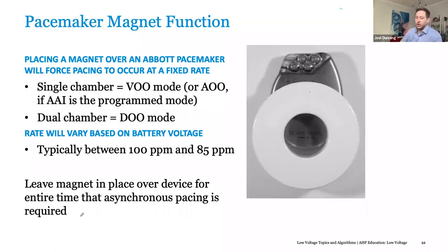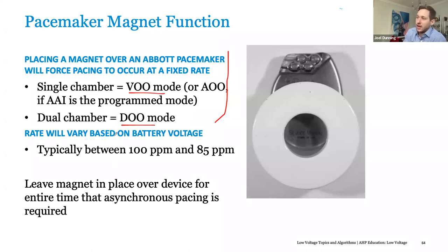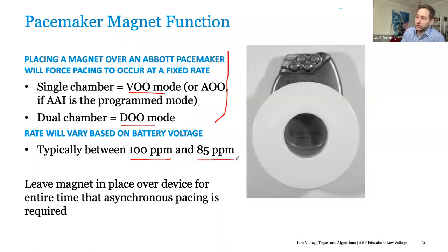Just to go over pacemaker functionality: pacemaker functions with ICDs will inhibit therapy as far as shocks, but will not affect the pacemaker. With a pacemaker, when you apply a magnet to it, it will cause it to pace asynchronously — either VOO or DOO depending on how it's programmed. It's also usually used as an indicator of battery life. In Abbott devices, if you place a magnet over a pacemaker and it's 100 beats per minute, that means it has a good battery. As you get closer to 85 beats per minute asynchronous, that indicates the battery is nearing ERI and needs to be replaced. Once you take the magnet off, it reverts back to its non-magnet mode.